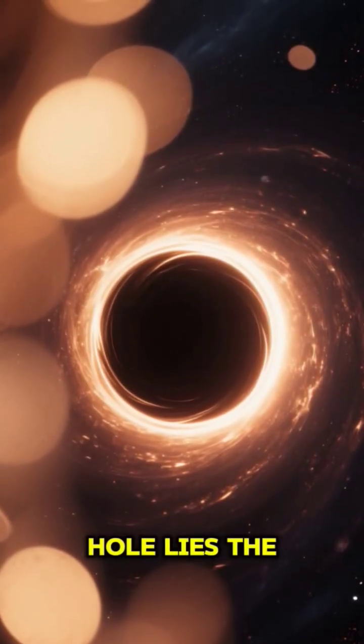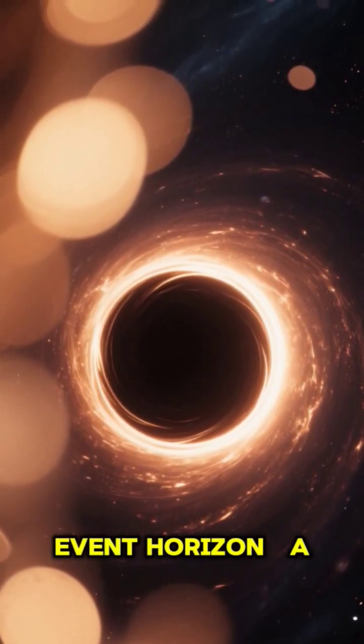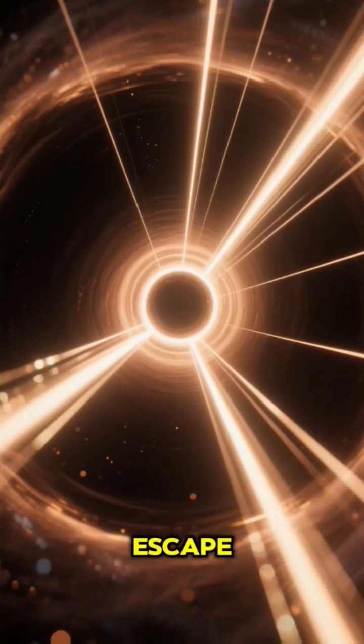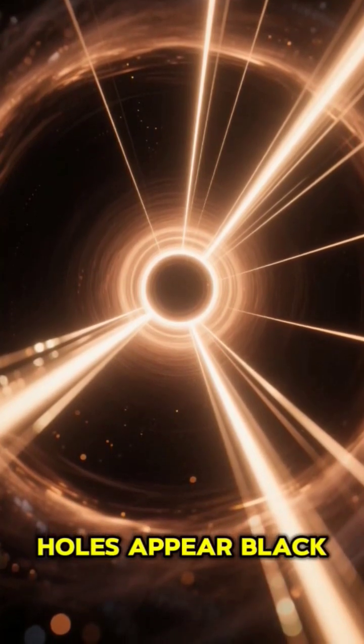At the edge of a black hole lies the event horizon, a point of no return. Anything crossing this boundary, even light, cannot escape. That's why black holes appear black.